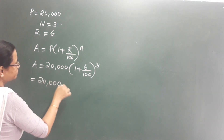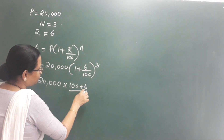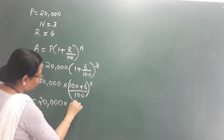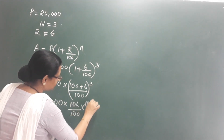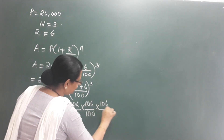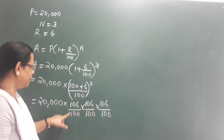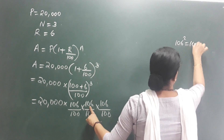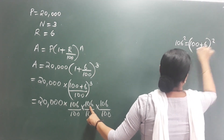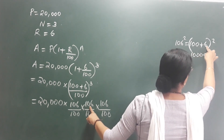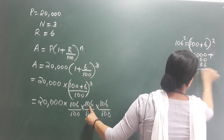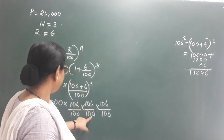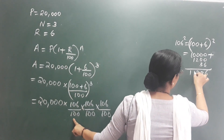Compounded annually means it is compound interest, not simple interest. The total is at the end of the 3rd year. We have a formula: Amount equals P into 1 plus r by 100, all raised to n. Amount equals 20,000 into 1 plus 6 by 100, all raised to 3. This is 20,000 into 11 by 10 into 11 by 10, applied 2 times. To make multiplication easier, we round to two decimal places.